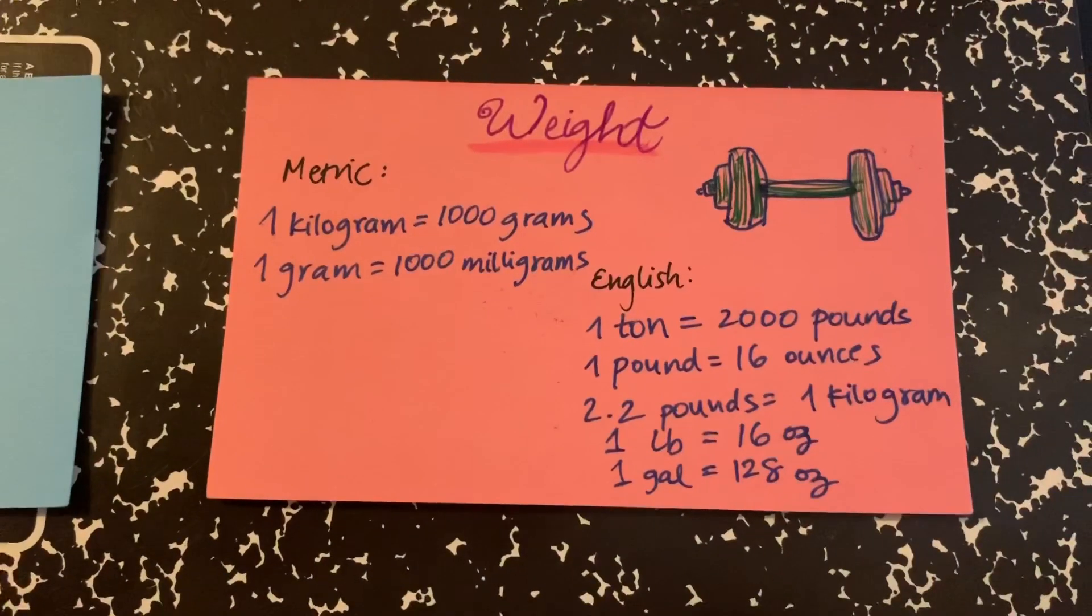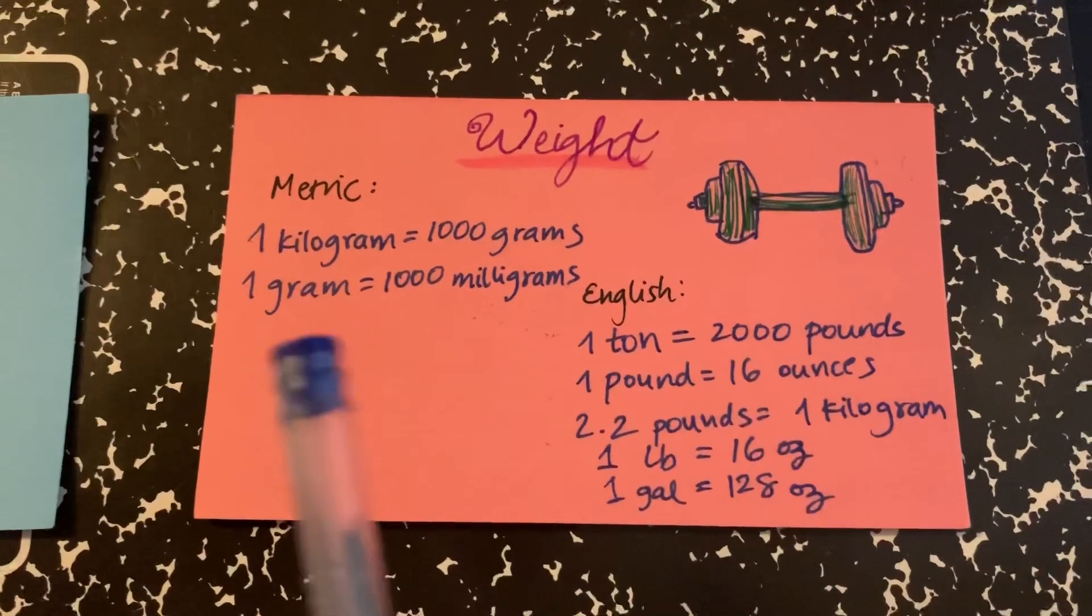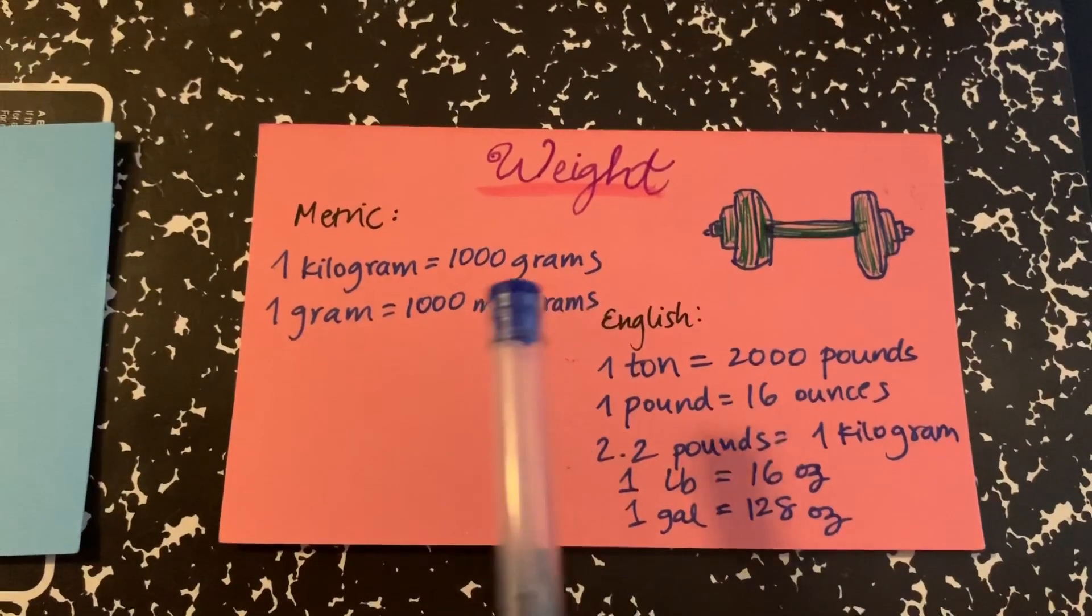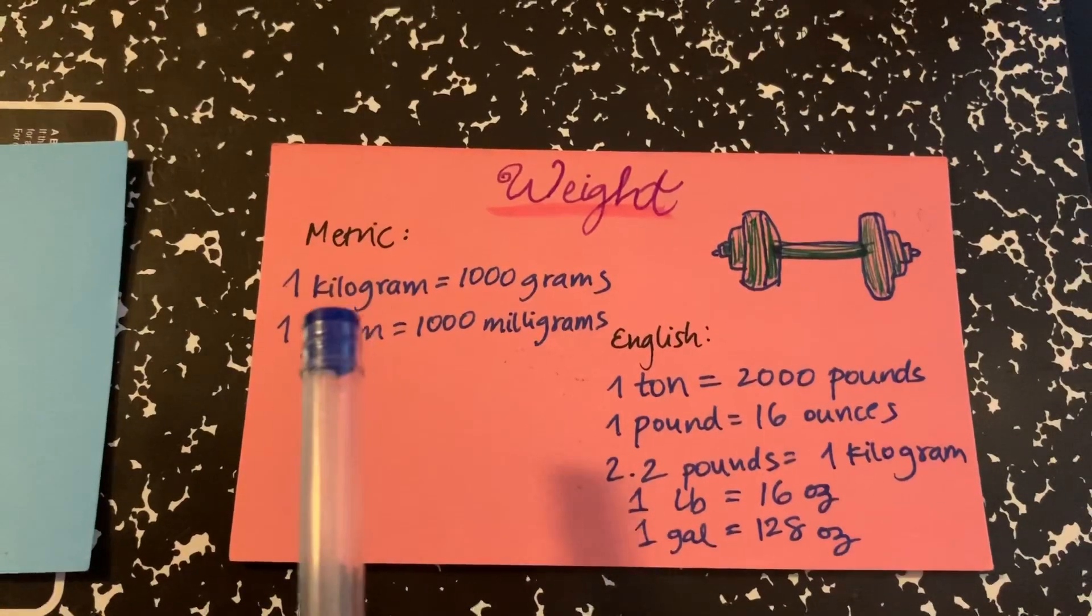Okay, now we move on to the weight system. Again, we have metric and English. So the metric, we have 1 kilogram is equal to 1,000 grams. Again, the kilo is a keyword.